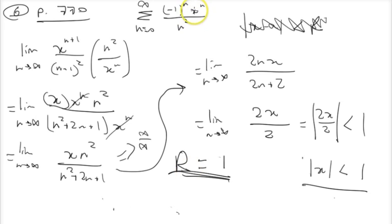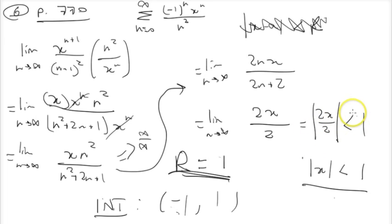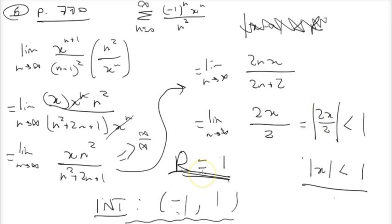Since this is a power series about 0, with an implied x minus 0, to find the interval of convergence we add and subtract the radius from a. So 0 plus 1 gives us 1 for the upper limit, and 0 minus 1 gives us negative 1 for the lower limit. This interval must be open, because when we plug in these endpoint values for x it makes the expression equal to 1, not less than 1. We can verify: plugging in 1 gives 1, plugging in negative 1 also gives 1. So that is our interval and radius of convergence.